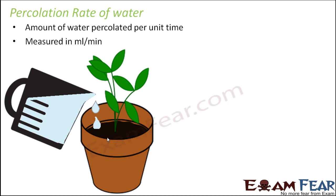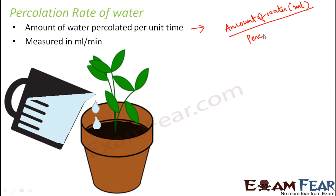So how do we calculate percolation rate of water? It is the amount of water that percolated — measured in milliliters — divided by the percolation time, which is the time it took for all the water to seep down, measured in minutes. So percolation rate is expressed in milliliters per minute.